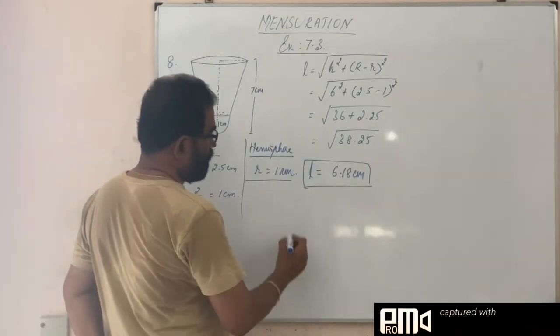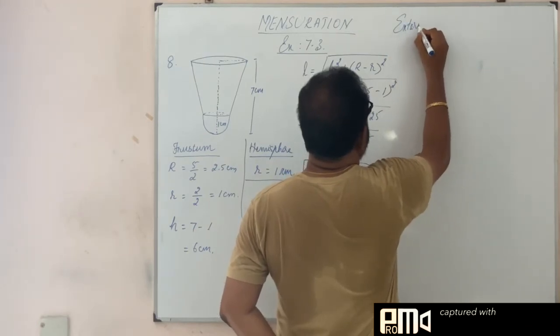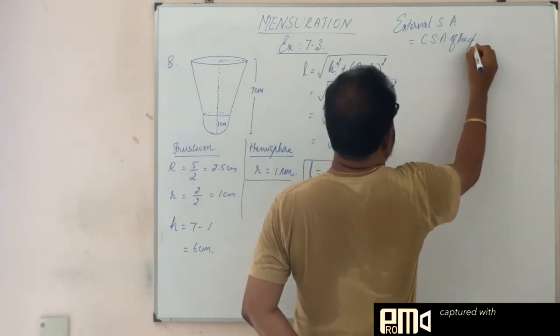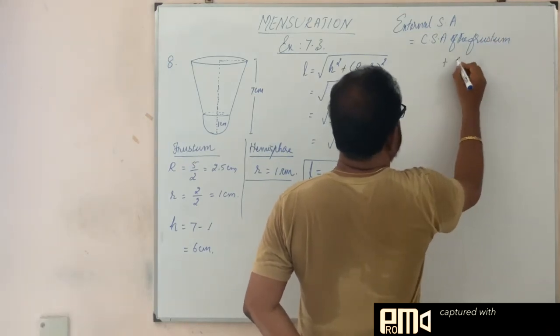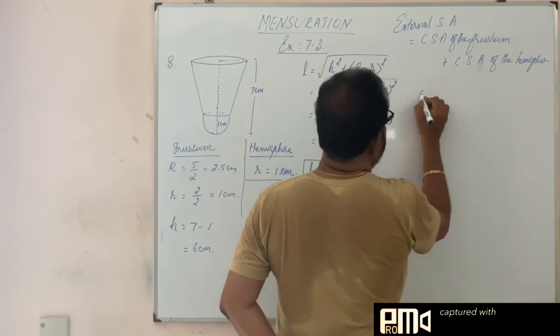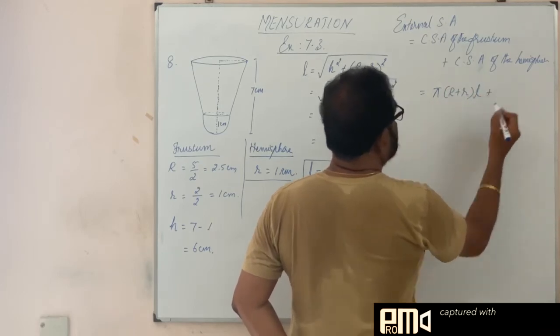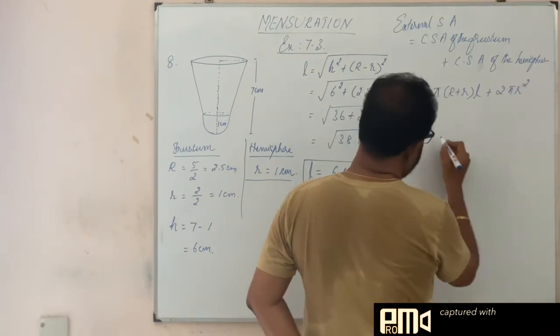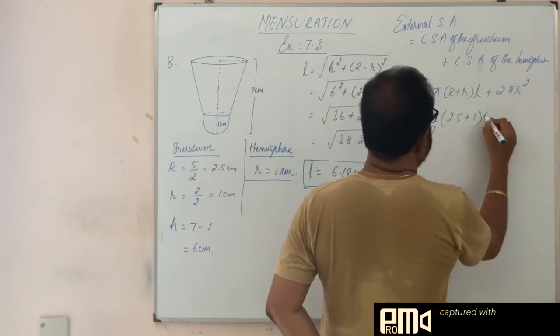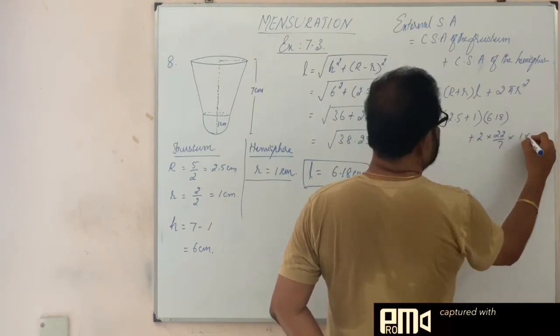Now, what is the external surface area? External surface area is equal to CSA of the frustum plus CSA of the hemisphere. CSA of the frustum, what is the formula? Pi (R plus r) into L. CSA of the hemisphere, it is 2 pi r squared. So this is 22 by 7 into (R plus r), 2.5 plus 1 into L, just now we found, it is 6.18, plus 2 into 22 by 7 into r squared, it is 1 into 1.